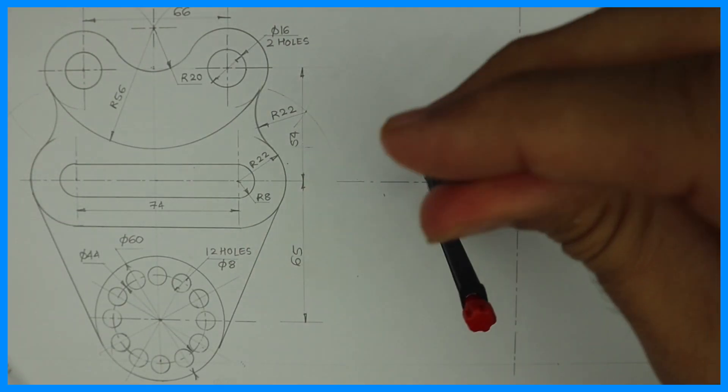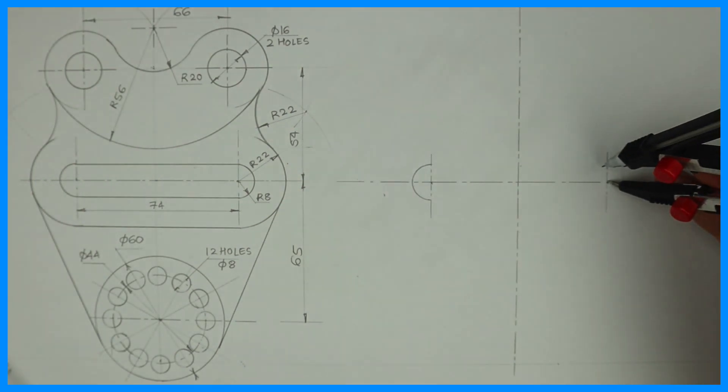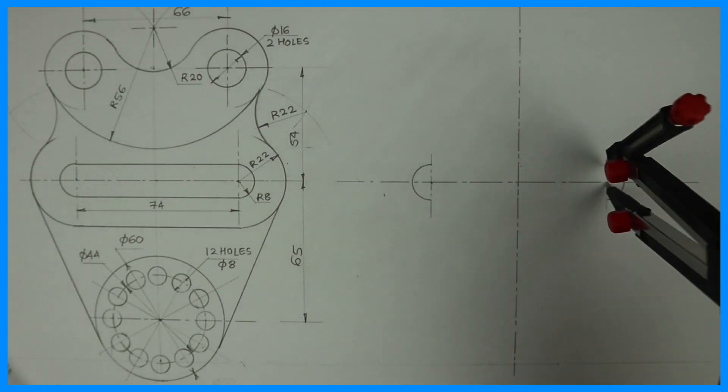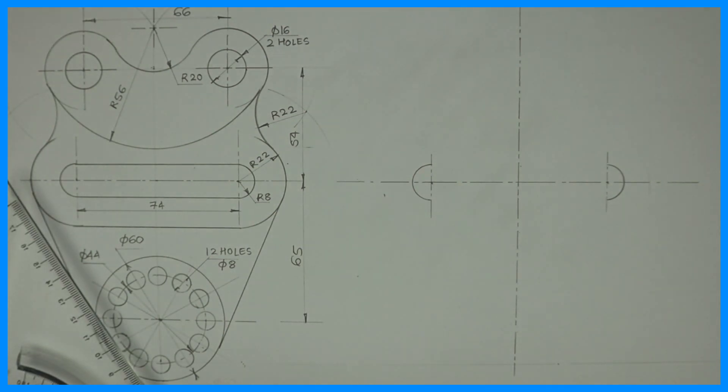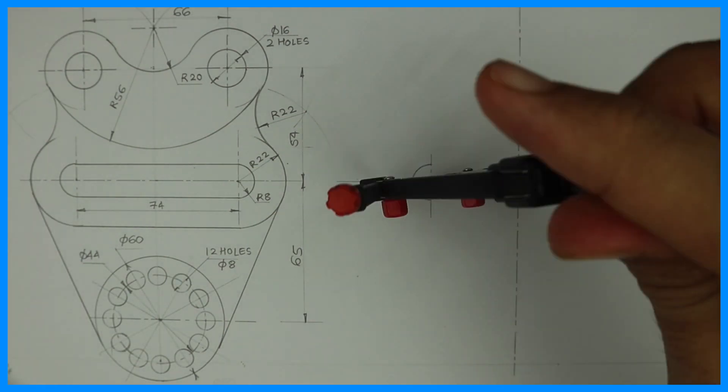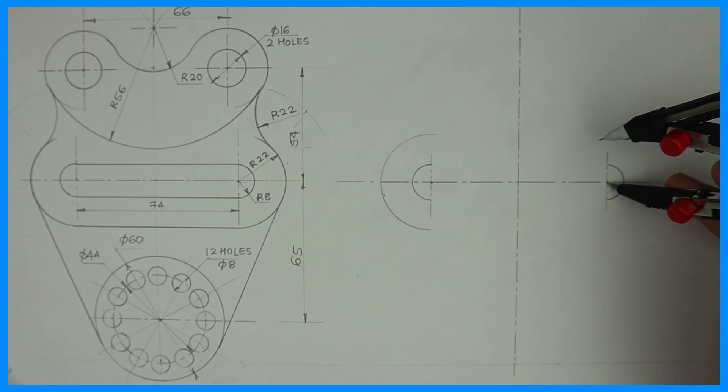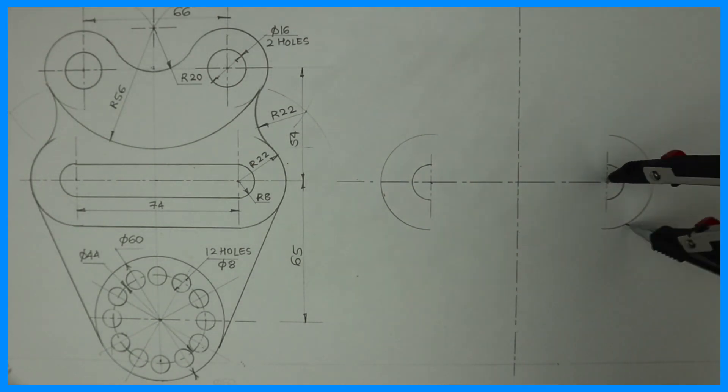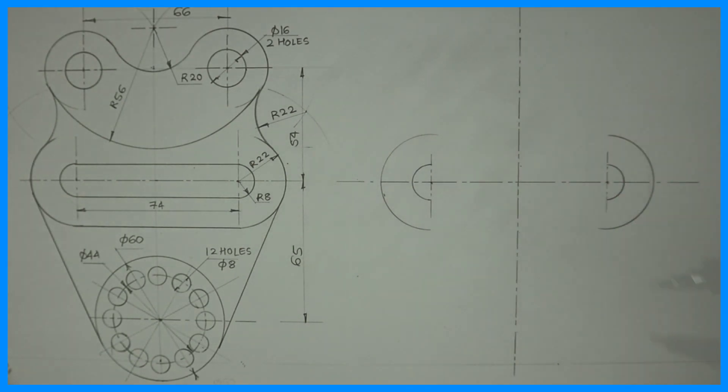Then I will take radius 8 and 22, so draw radius 8 and 22 on both sides and then draw horizontal lines as shown in the figure.